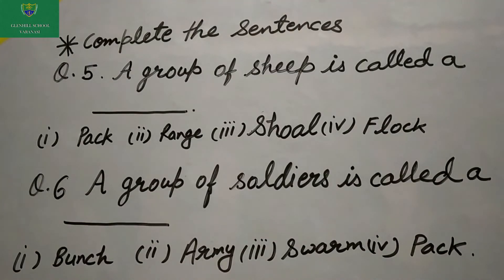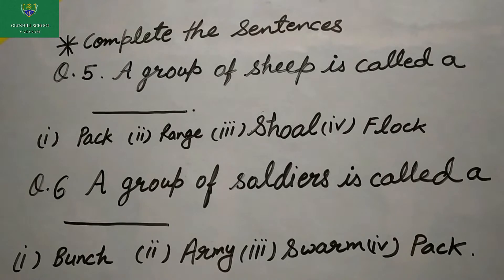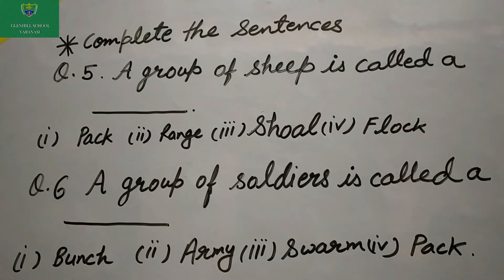Question 5: A group of sheep is called a ___. Options are: pack, range, shore, flock. Question 6: A group of soldiers is called a ___. Options are: bunch, army, swarm, pack.